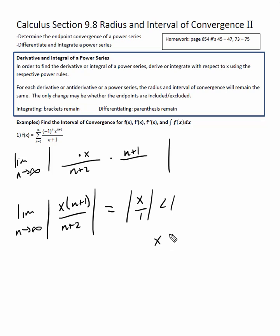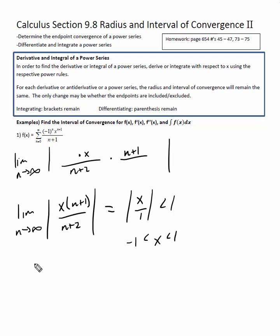Thus x is less than one but greater than negative one. So the two values are negative one and one. Now I have to determine if I'm going to have a closed, open, or mixed interval. Let's figure this out — let's do f of x first.